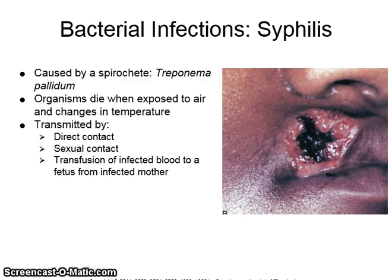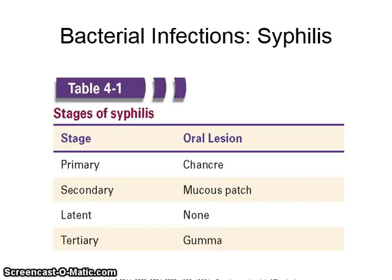Syphilis is caused by a spirochete, Treponema pallidum. Organisms die when exposed to air and changes in temperature. Syphilis is transmitted by direct contact, sexual contact, and transfusion of infected blood, as well as to a fetus from an infected mother. The stages of syphilis and the oral lesions associated with them: primary syphilis will show an oral chancre; secondary will have a mucous patch; latent has no oral lesion; and tertiary will exhibit a gumma.